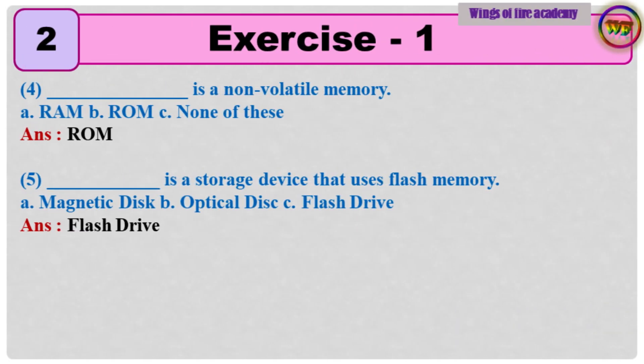Question 4: Dash is a non-volatile memory. A. RAM, B. ROM, C. None of these. Answer: ROM. Question 5: Dash is a storage device that uses flash memory. A. Magnetic disk, B. Optical disk, C. Flash drive. Answer: Flash drive.